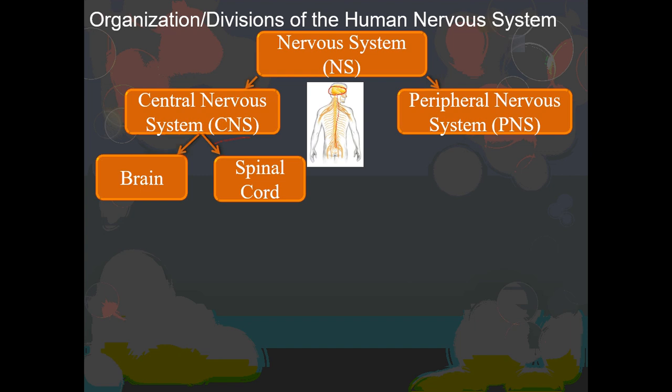That's it for the central nervous system — those are the two major branches. Eventually we'll go on to talking about the brain, and we'll talk about many subdivisions and areas within the brain, as well as functions of different areas. We'll also take a look at the spinal cord and a cross section through it. But in terms of the major divisions, that is it for the central nervous system.